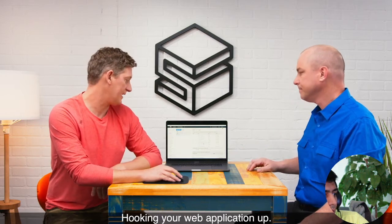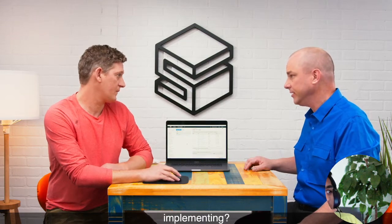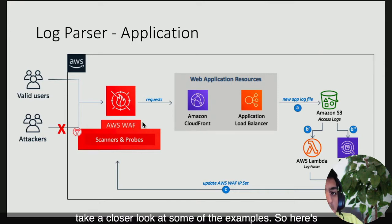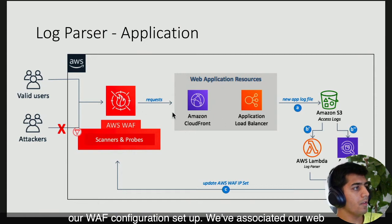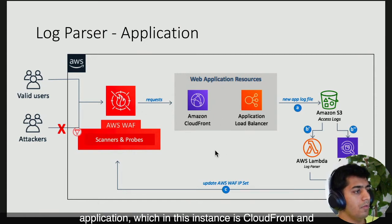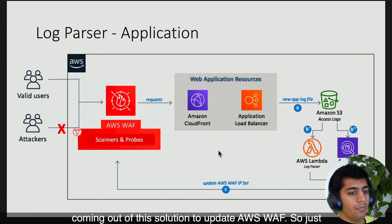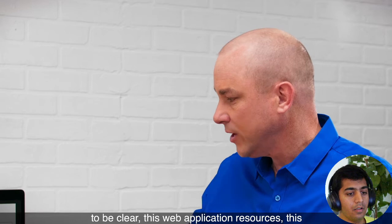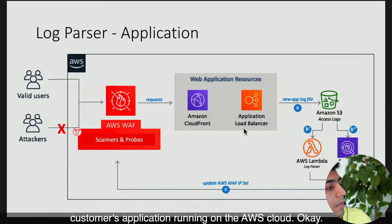Can you give me some examples of some of the firewall protection being implemented? Let's dive into the architecture. Here's our WAF configuration — we've associated our web application, which in this instance is CloudFront and an Application Load Balancer. There are a number of different ways we can analyze logs coming out of this solution to update AWS WAF. To be clear, this web application resource is the customer's own application running on the AWS cloud.